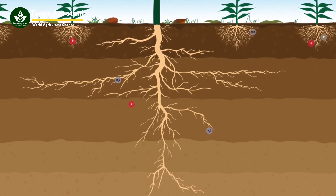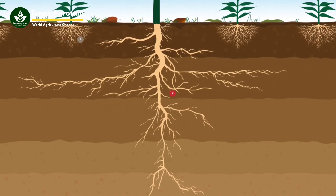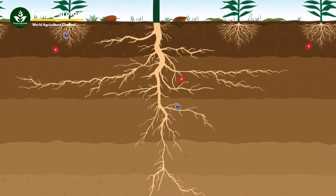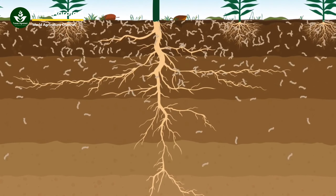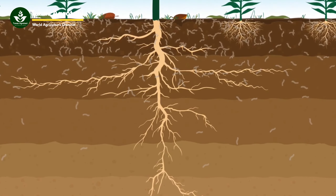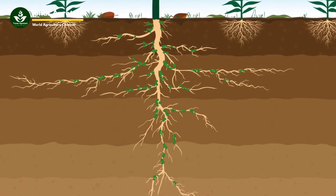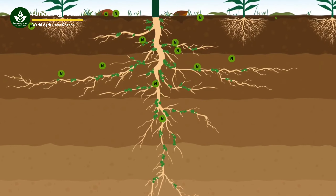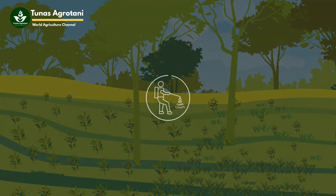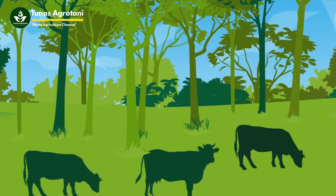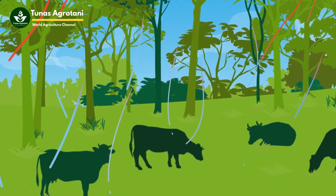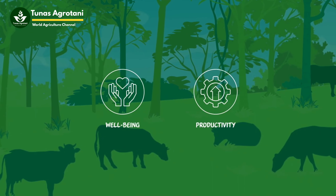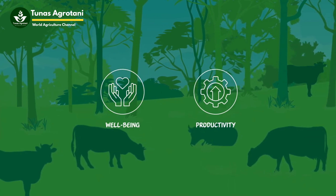Trees can improve microclimate, reduce water and wind erosion, and improve soil fertility by trapping nutrients, building soil organic matter, and stimulating soil life. Furthermore, leguminous trees fix nitrogen that can be used by crops, lowering fertilizer needs. Pesticides can also be reduced as intercropping generally lowers the incidence of pests and diseases. In silvopastures, trees reduce heat stress for livestock, increase their well-being and productivity, and provide fodder in times of scarcity.